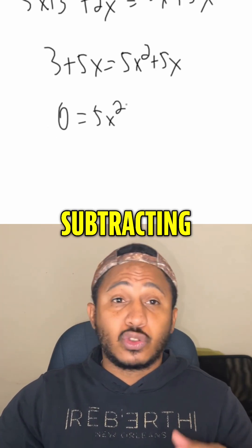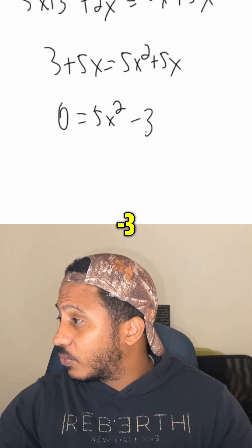0 equals 5x squared. Subtracting 5x, we just get minus 3.